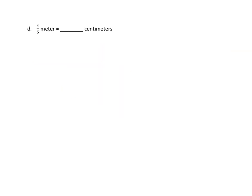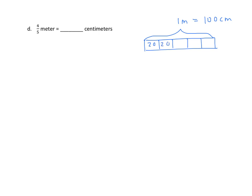Let's do another example — this time meters to centimeters. We'll make a tape diagram. We have one meter, and we're going to divide it into five equal parts. One meter equals one hundred centimeters. Taking that hundred centimeters and dividing by five, we get twenty in each part. We want four-fifths, so we partition four of the five. Twenty times four gives us eighty centimeters.